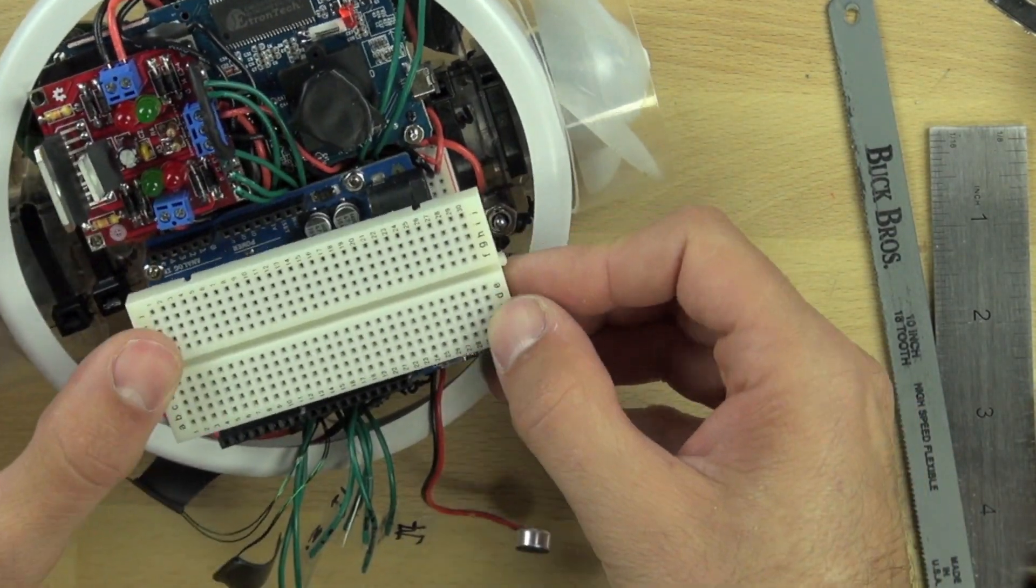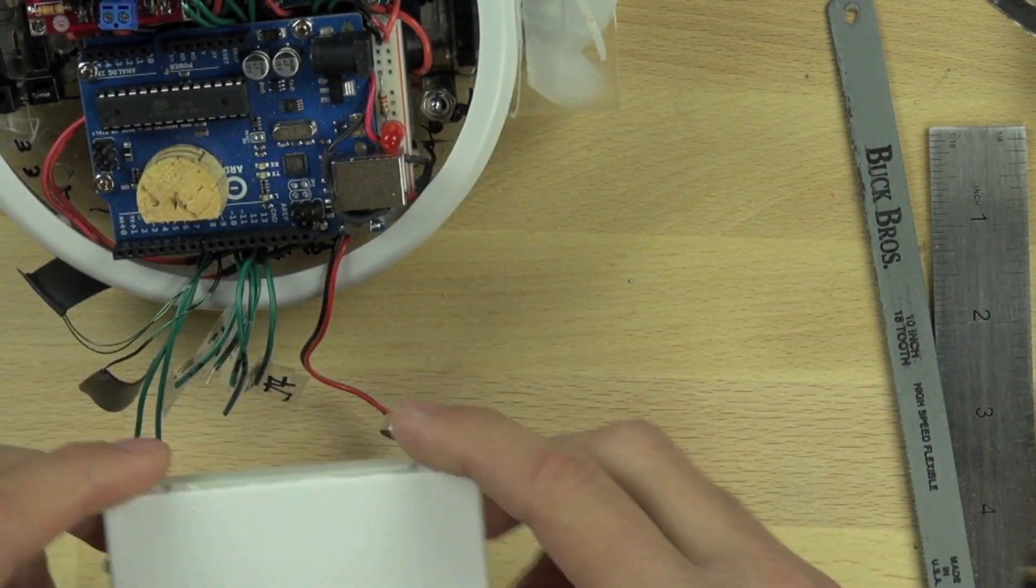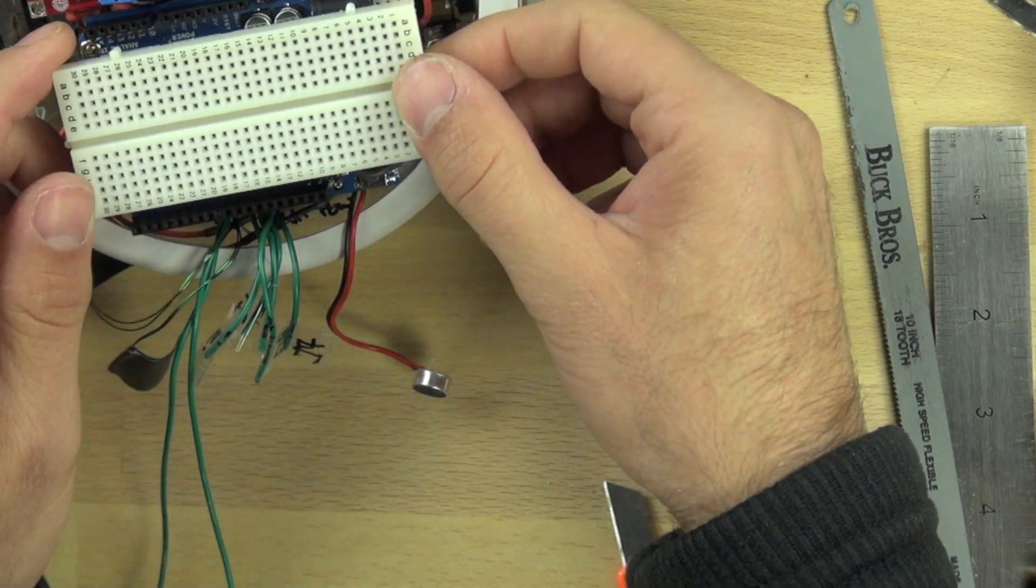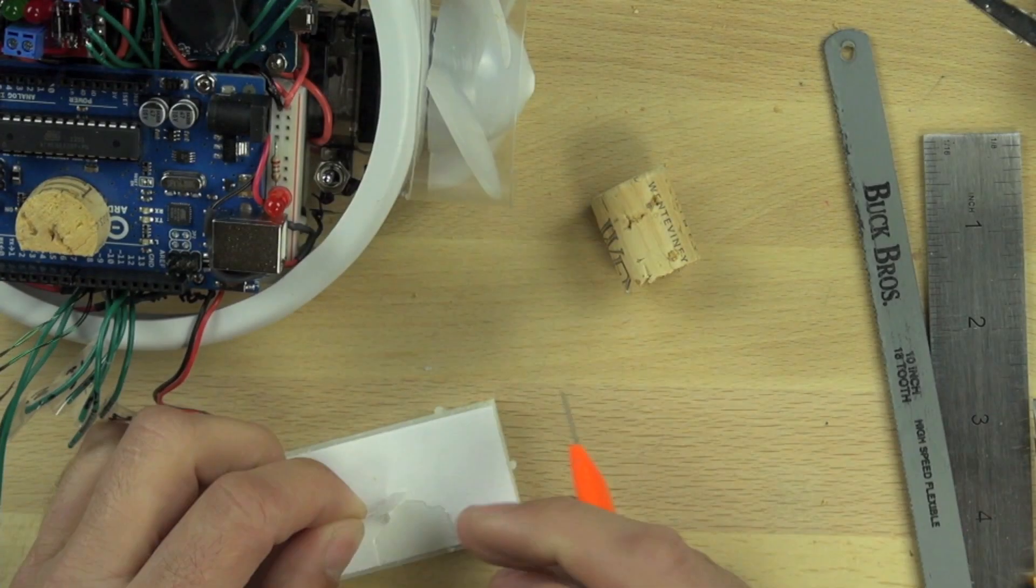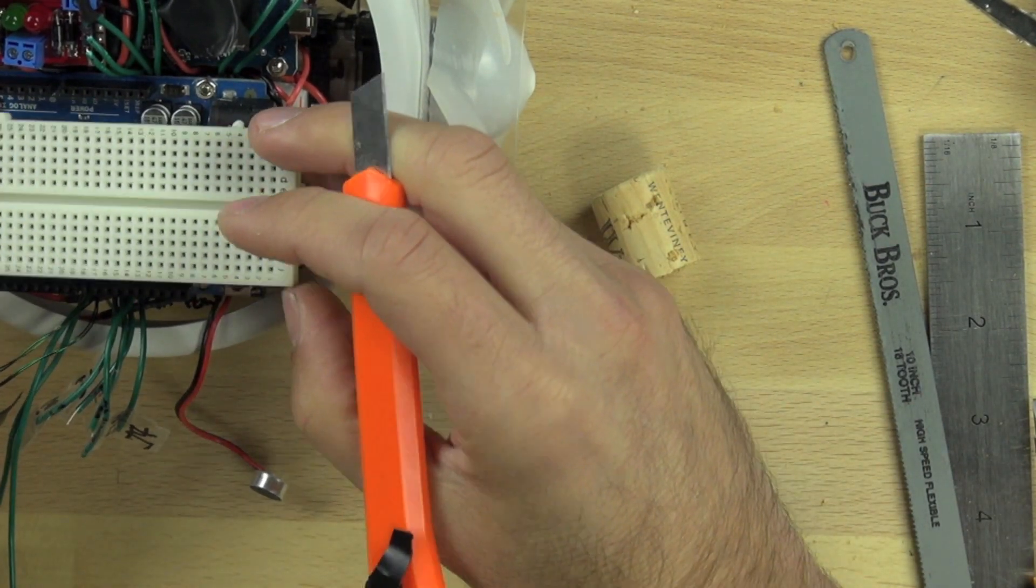Now we have our connection and the breadboard will be well supported. There's double stick tape on the back of the breadboard with a paper coating over it.